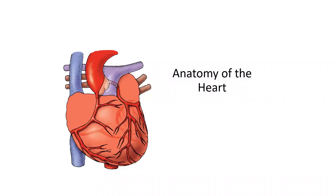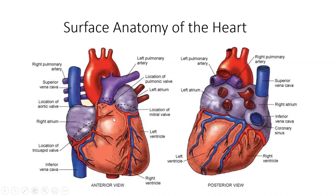In this micro lecture, we'll be discussing the anatomy of the heart. Let's look at the surface. This is the front portion or the anterior view of the heart. This is the back portion or the posterior view of the heart. Let's look at the different structures.